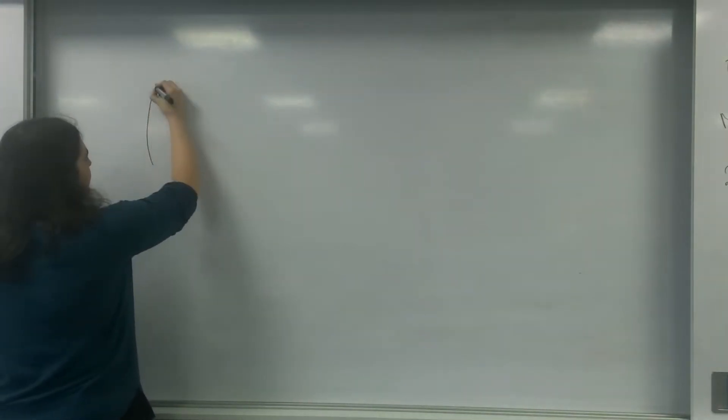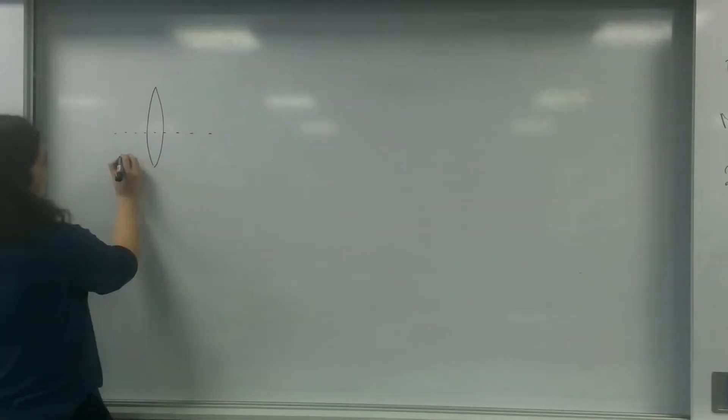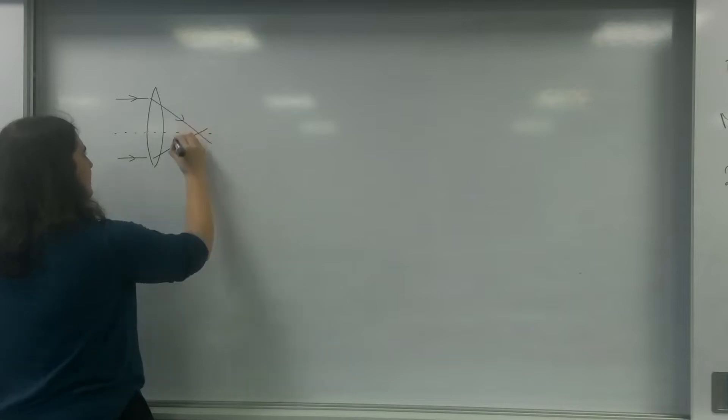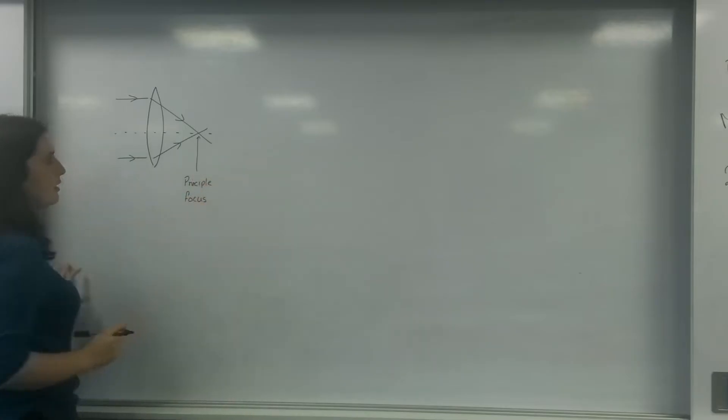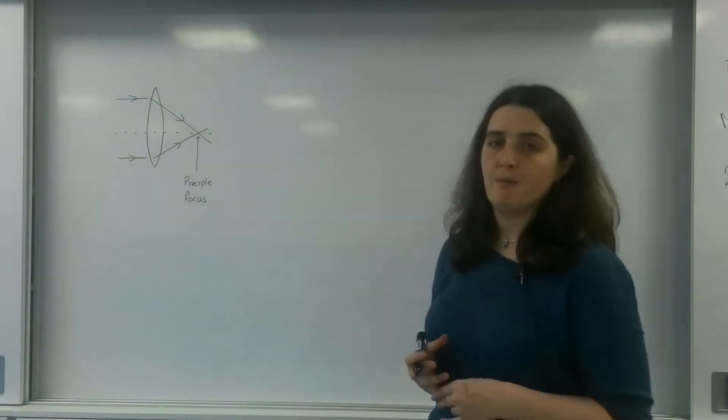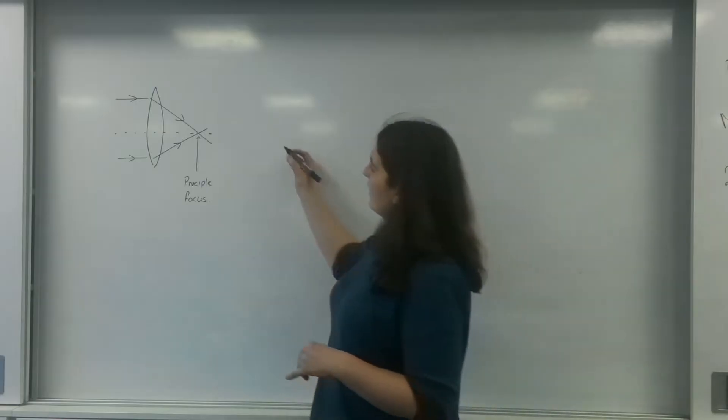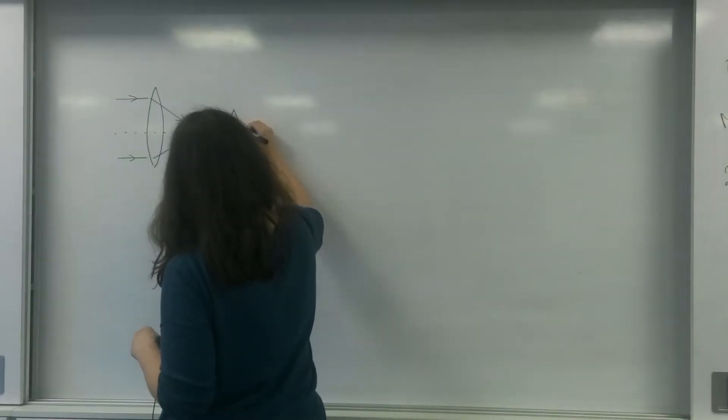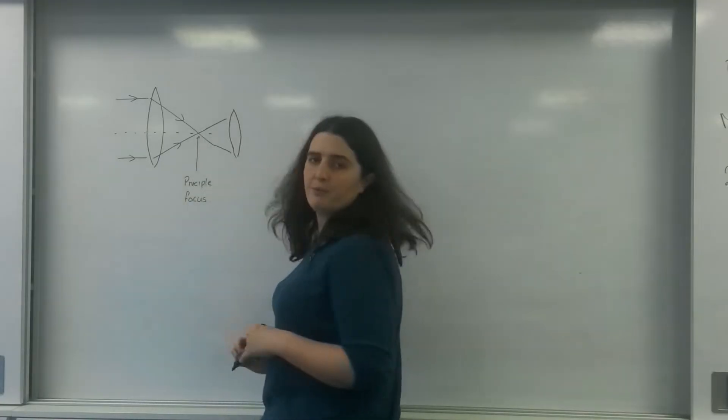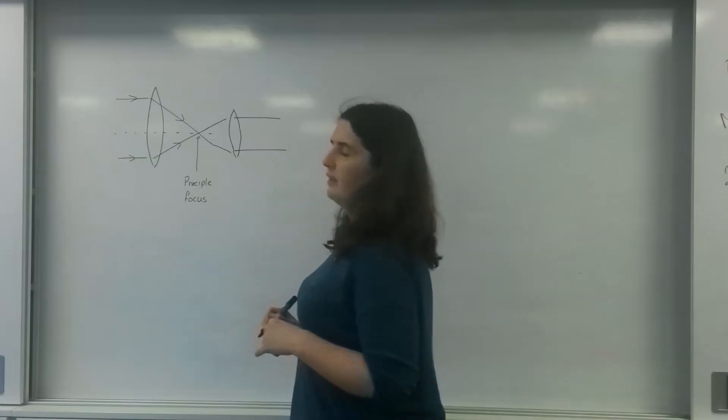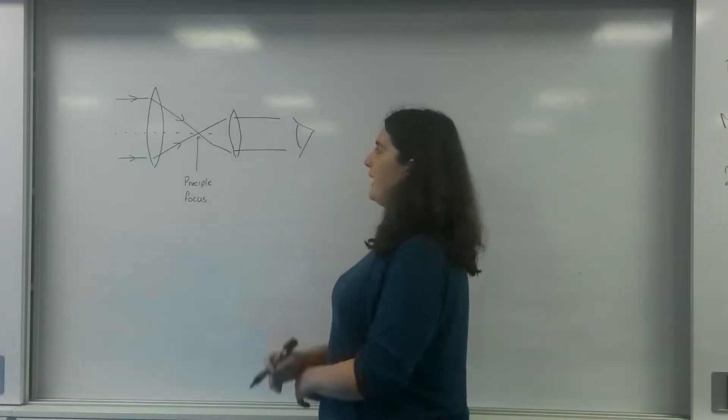Just to recap, lenses here. Light will come in and it will be refracted and it will cross at something called the principal focus. What a refracting telescope does is it has another lens here which can take this information and bring that to our eye there.